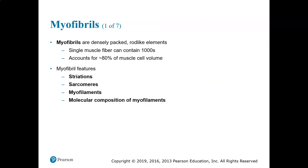Myofibrils are densely packed, rod-like elements. A single muscle fiber can contain thousands of myofibrils, and they account for about 80% of muscle cell volume. Each myofibril contains striations, contracting units called sarcomeres, myofilaments (which are actin and myosin), and the molecular composition of those myofilaments.